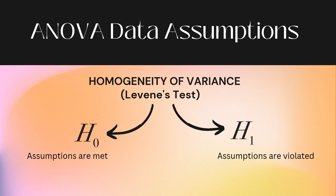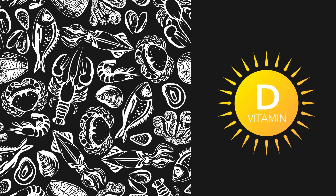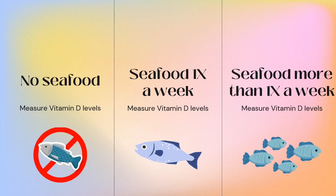Let's go through an example together. Vitamin D is good for you — spending a few hours in the sun does wonders for us. It's part of the reason going for a walk helps us feel better. But there are ways to keep vitamin D levels healthy even when the sun isn't shining. I have a theory: seafood-rich diets result in higher levels of vitamin D. So let's test that with an ANOVA. I have three groups: people who don't eat seafood, people who eat it once a week, and people who eat it more than once a week.